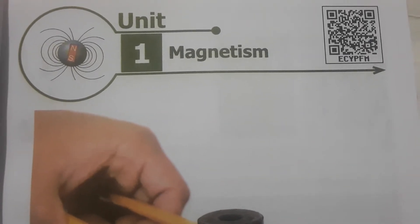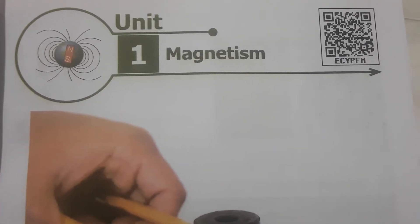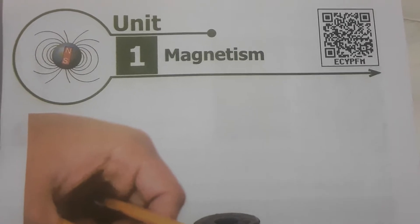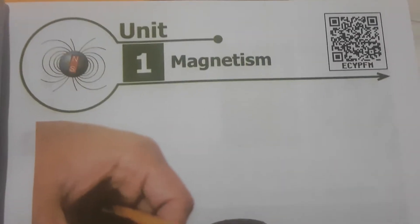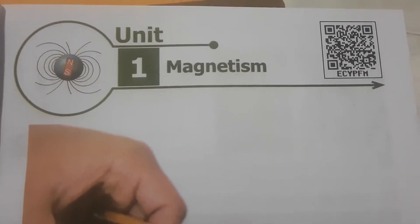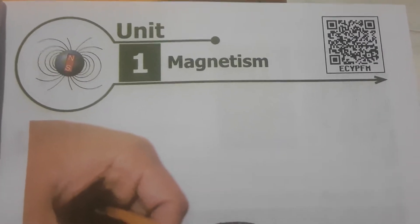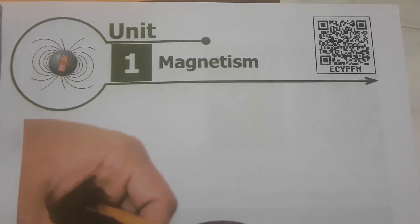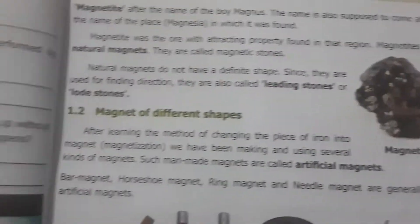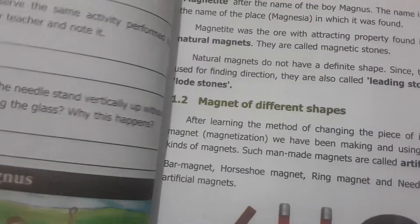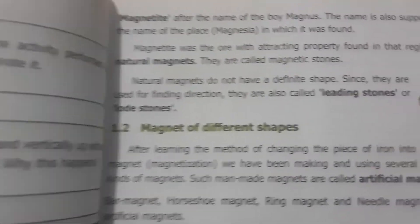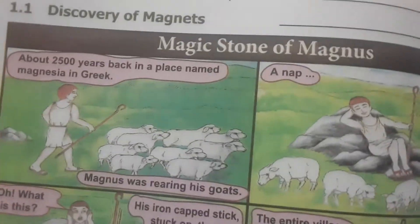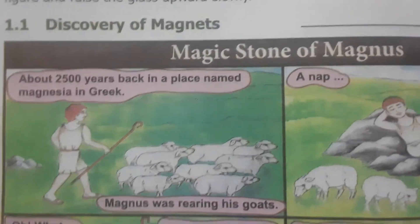Let's see the book back evaluations from Standard 6, Term 3, Unit 1 - Magnetism Science book. What is magnetism? Magnetism is the attracting property of some materials over iron material. In this lesson, they give the magic stone of magnets, and natural magnets are discussed.